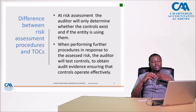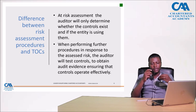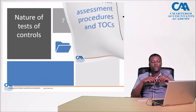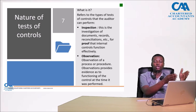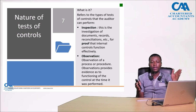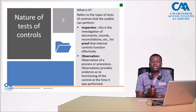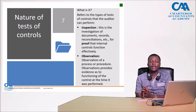What are the different types, or what is the nature of tests of controls? Here we look at the types of tests the auditor can perform as part of TOCs. You can inspect — where the performance of the control activity during transaction processing leaves an audit trail. When the auditor comes in, you go through that audit trail and inspect relevant documents that provide evidence of the effectiveness of the control.